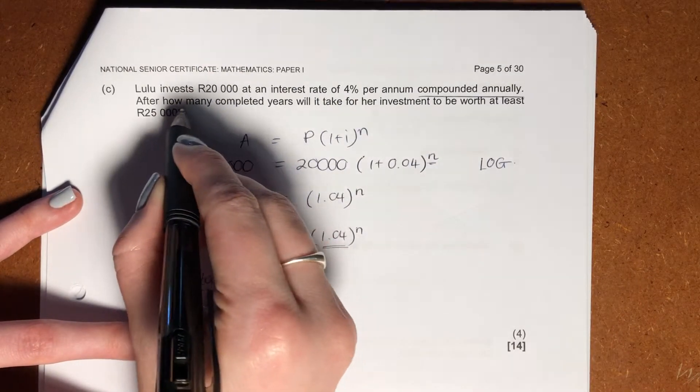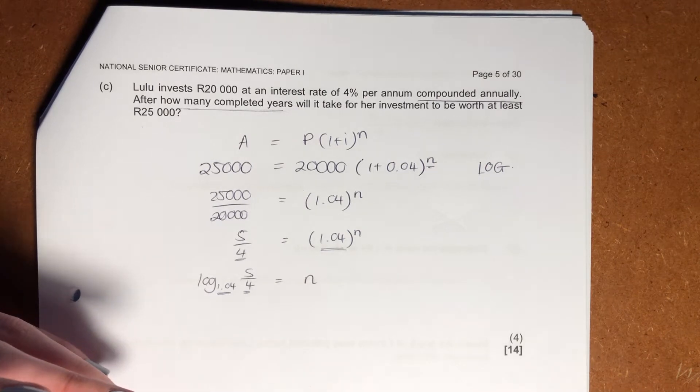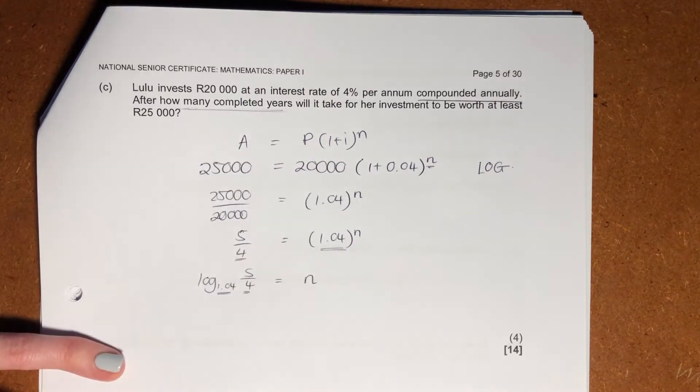Okay, so please note here, it says completed years. So if you get a decimal answer, you can't just leave it as a decimal answer. You actually have to make sure that you are writing it as a completed year.